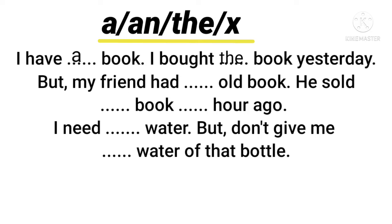Next: 'But my friend had ___ old book.' We need an article for 'book', but there is an adjective 'old' before it, so the article goes before the adjective. Since 'old' begins with a vowel sound — 'oh' — we use 'an'. So: 'my friend had an old book'.